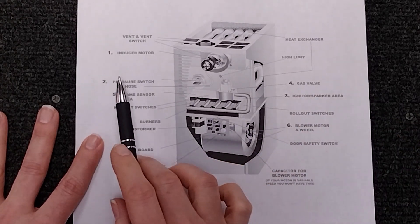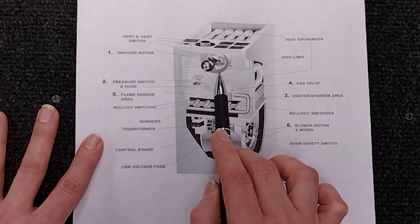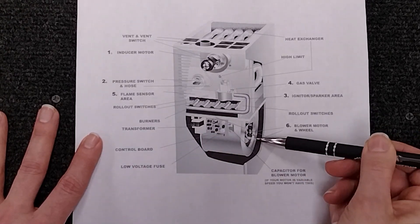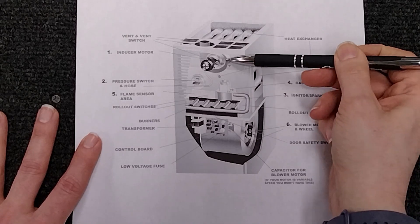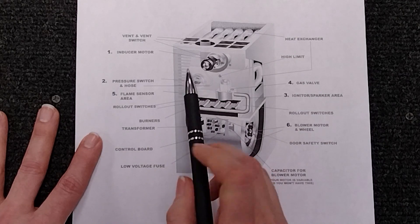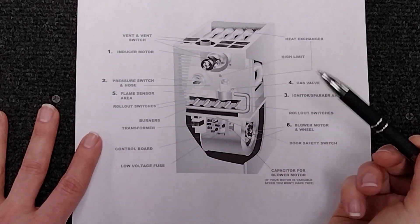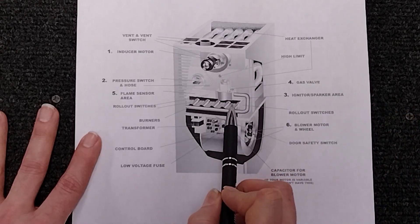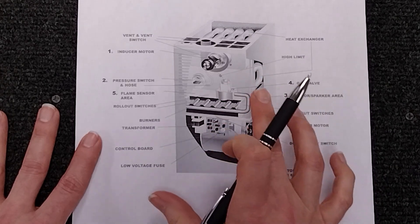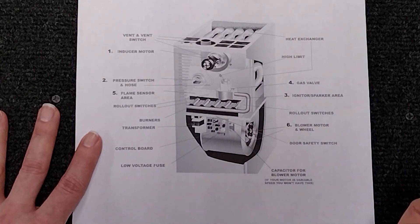So the very first thing that should happen is your vent motor or your inducer motor should come on. Your blower motor and your inducer motor should not come on at the same time. So as that inducer motor comes on obviously it's going to be a safety thing because we're dealing with gas. So noxious fumes, any sort of combustion, that needs to be vented out of your unit up through the roof.